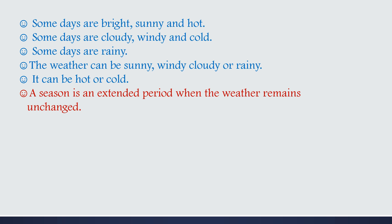If it is raining, for some days it will rain. If it is a cold atmosphere, for some months it will remain cold. This is the extended period when the weather remains unchanged.